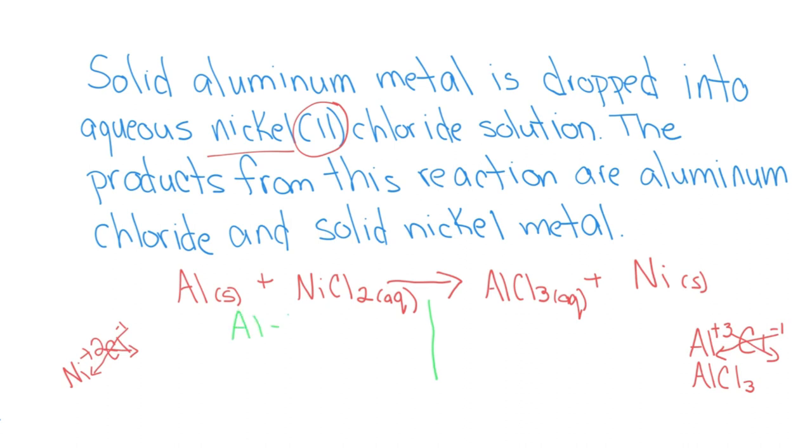I have aluminum. I have one of those. I have nickel. I have one of those on the reactant side, and on the product side, I have one. Then I have chlorine. I have two chlorines on the reactant side, and three chlorines on the product side.